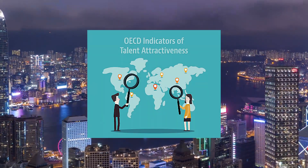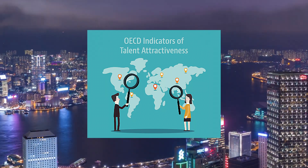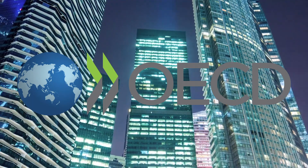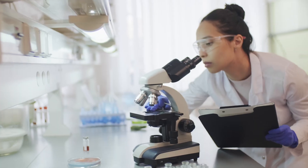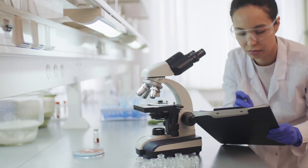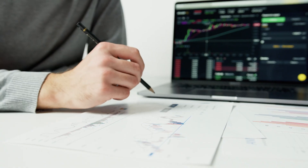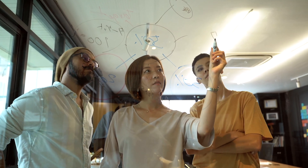Now let's turn our attention to this new Indicators of Talent Attractiveness tool developed by the Organization for Economic Cooperation and Development, better known as the OECD. It measures member states' strengths and weaknesses in attracting and retaining talented migrants. There are three types of talented migrant workers they focus on: highly educated workers with master's or doctoral degrees, foreign entrepreneurs, and university students. The OECD conceptualizes talent attractiveness in terms of migration policy, development, and outcomes, with more favorable policies indicating a more attractive country.